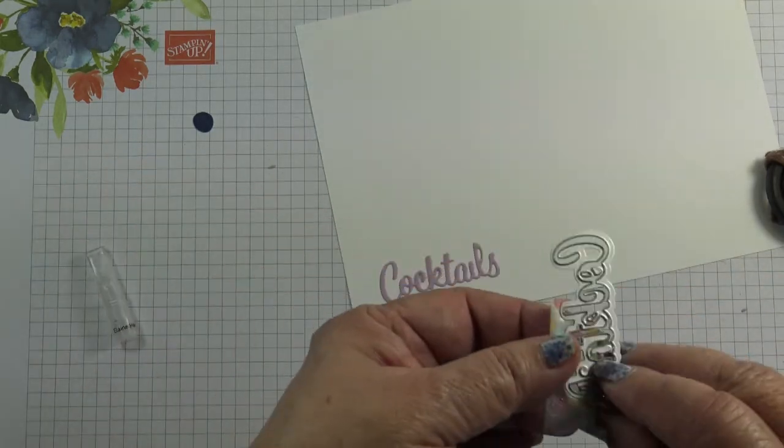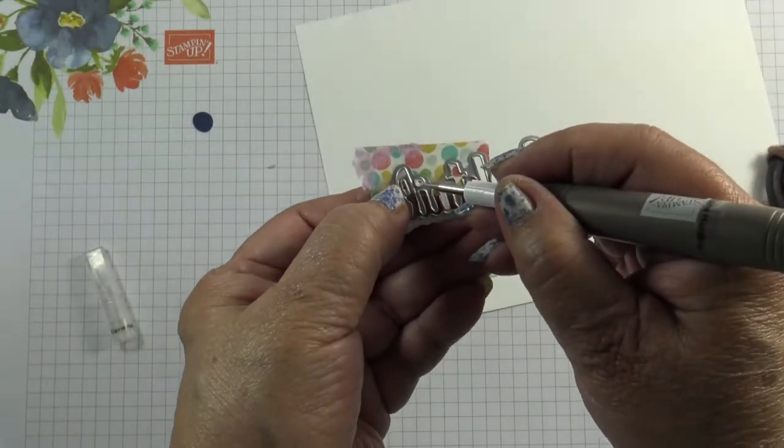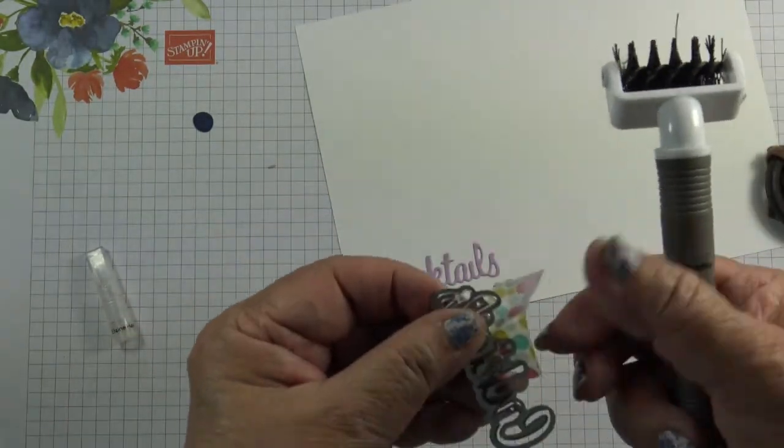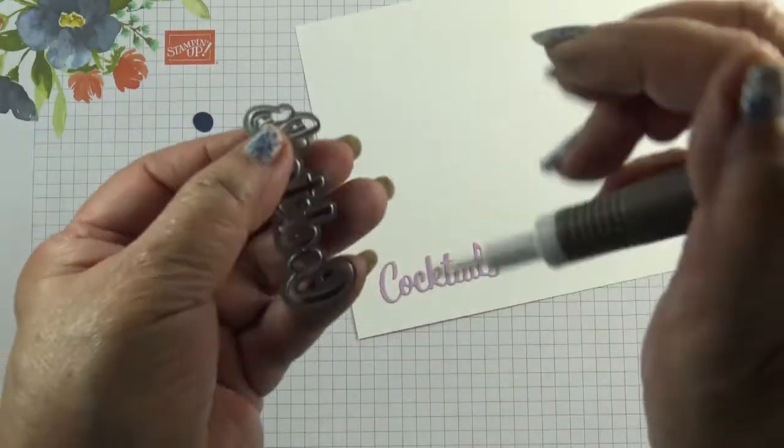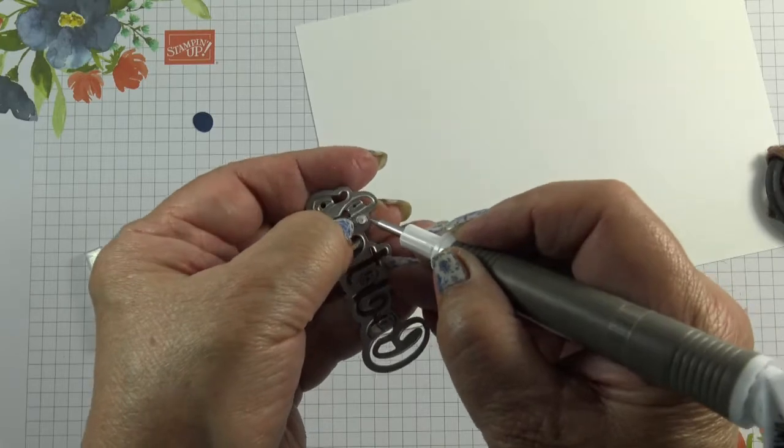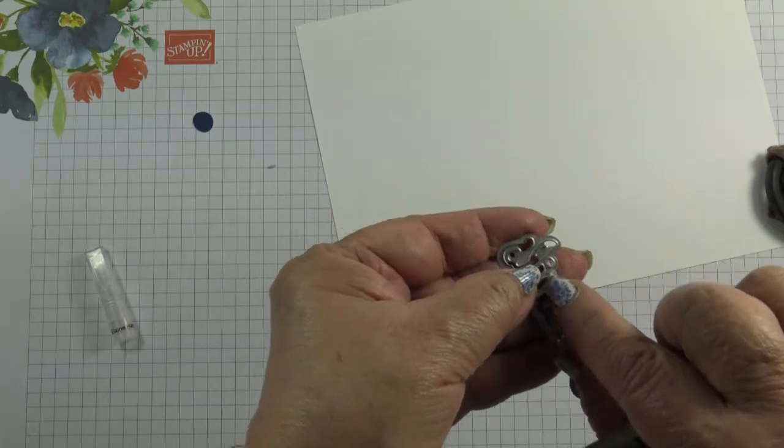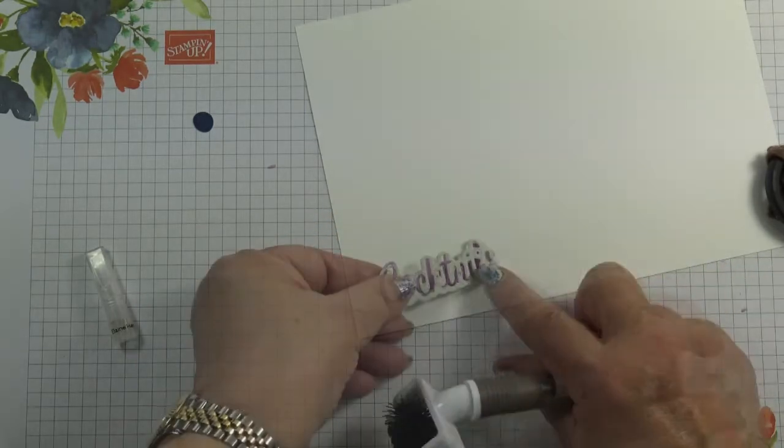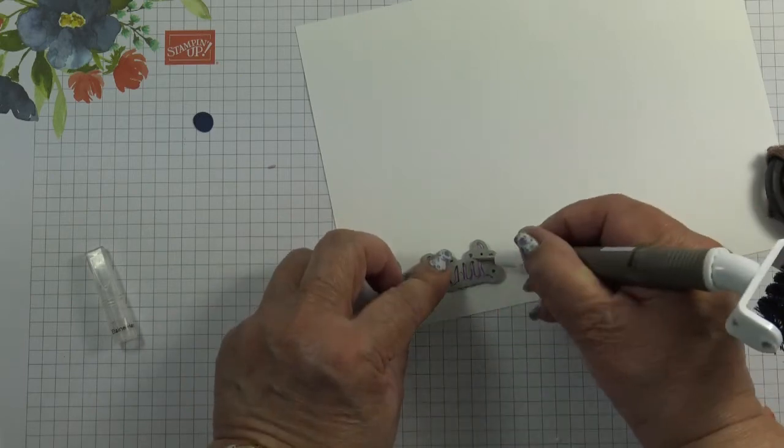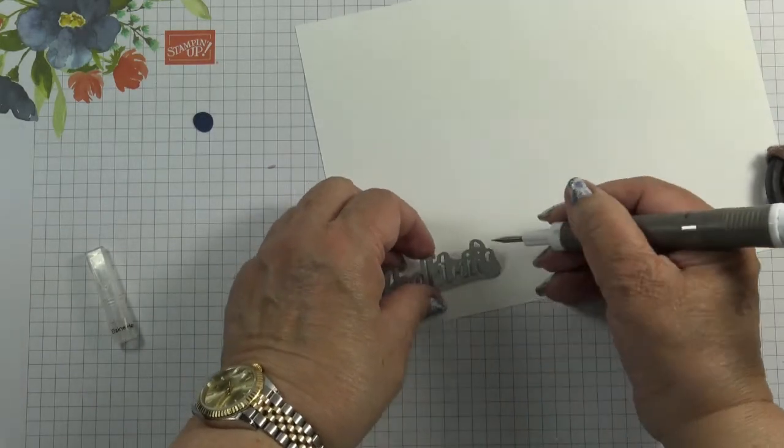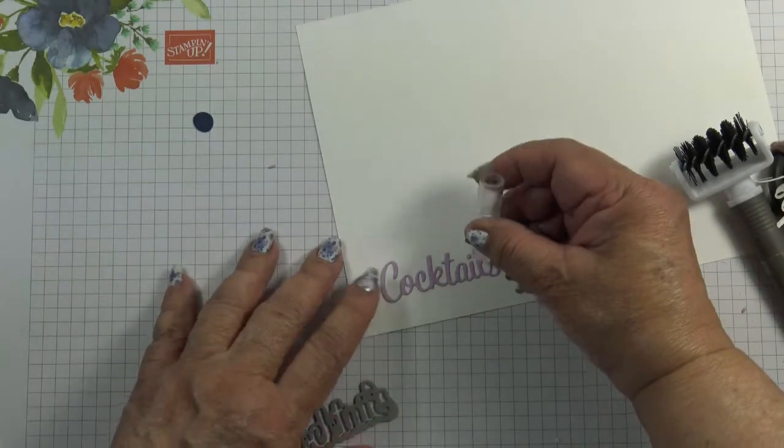And then take this bit off, your washi tape off, and you want to take the backing tape off this as well, but leave that dot inside. Pop this over your letter, and then you've got perfect placement of your dot.